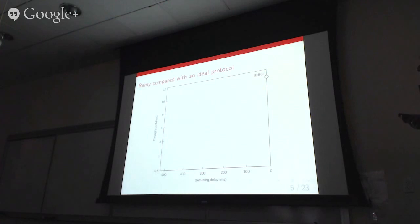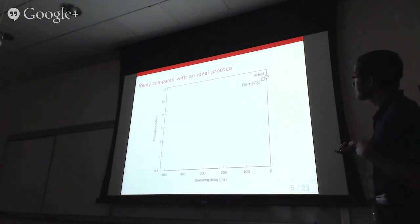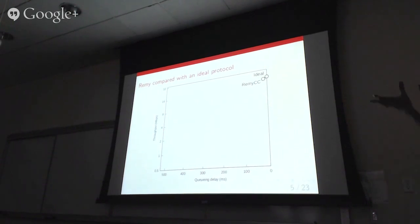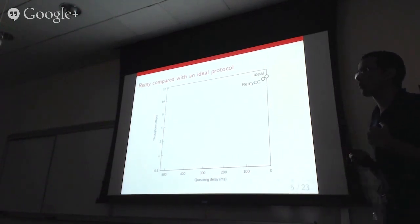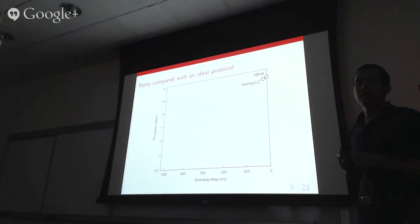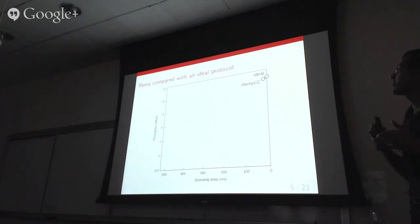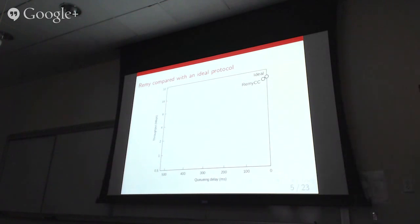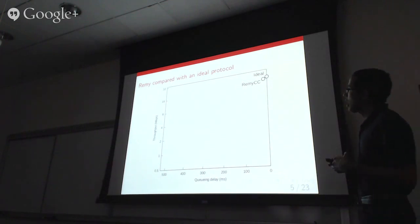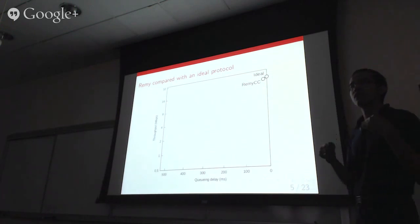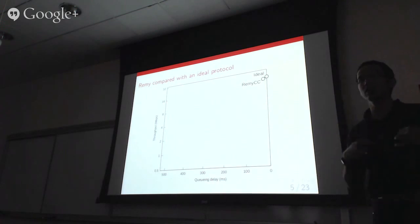Where does the RemyCC land? On this graph, we're pretty close to ideal. In this specific experiment, the RemyCC was within about 5% of the ideal protocol's throughput and about 10% higher in end-to-end delay. This at least gives us a sanity check that on simplified scenarios, the protocol generation tool is doing a sensible job.